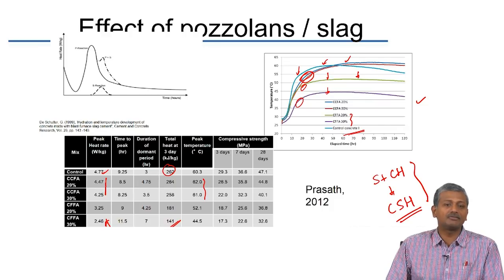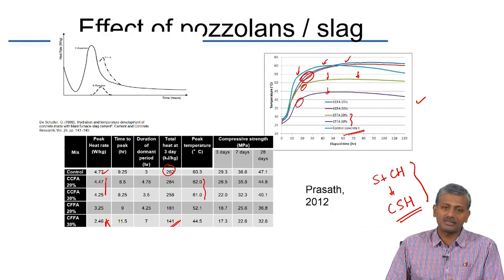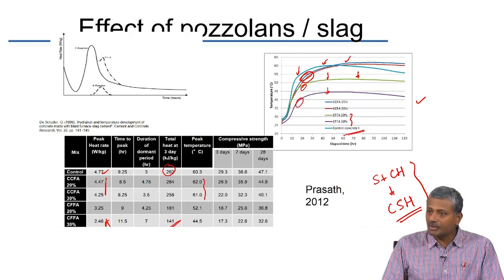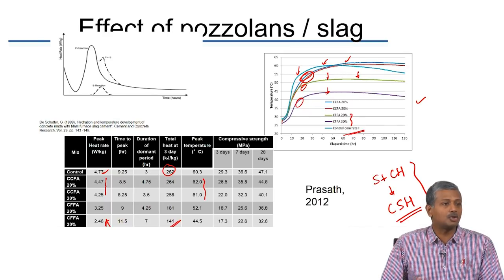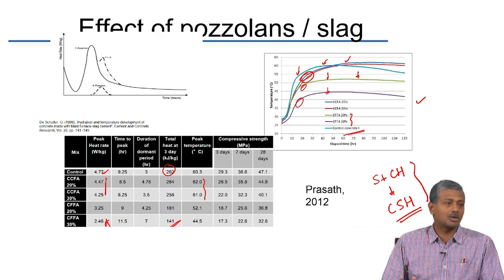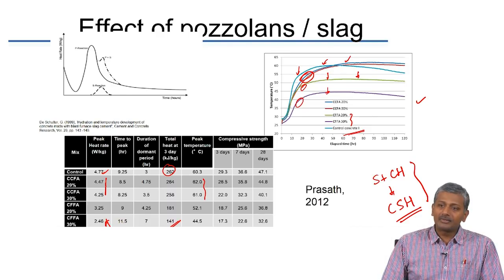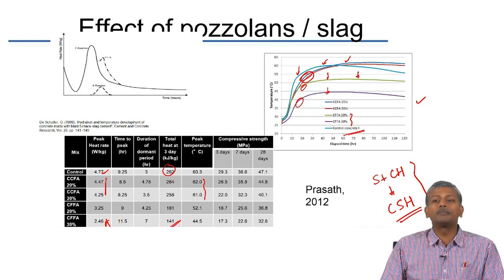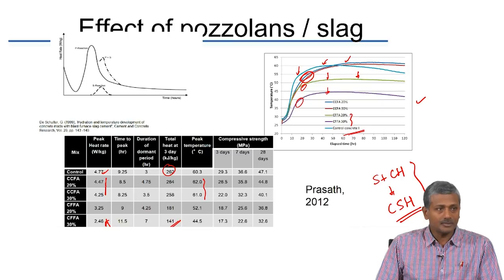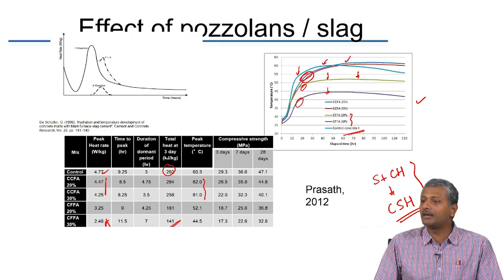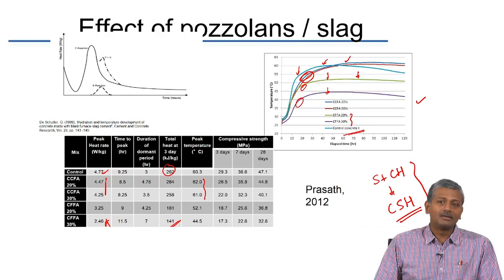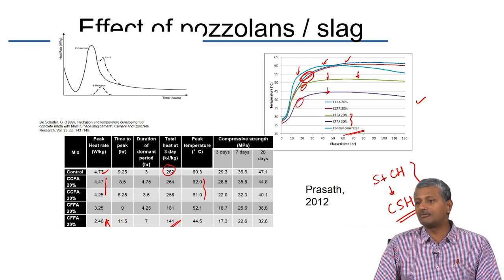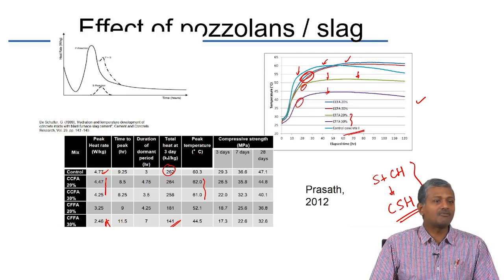In the heat pattern, type F fly ash as a cement replacement shows a reduction in peak heat rate, whereas type C fly ash shows no major change. The long-term strength and durability characteristics also differ between type F and type C concrete. Cement companies use whatever fly ash is available at the least cost, and sometimes they receive fly ashes from different locations and need to blend them, making it challenging to maintain consistent chemical and physical characteristics.